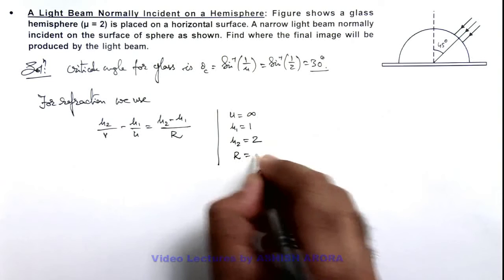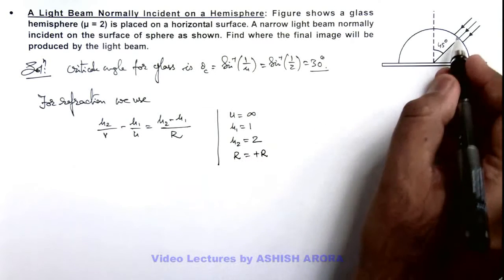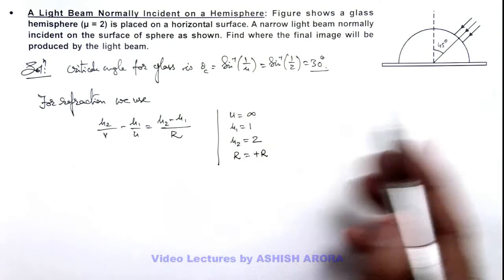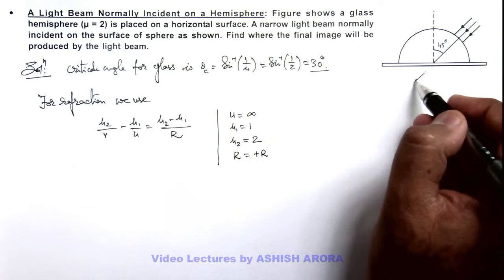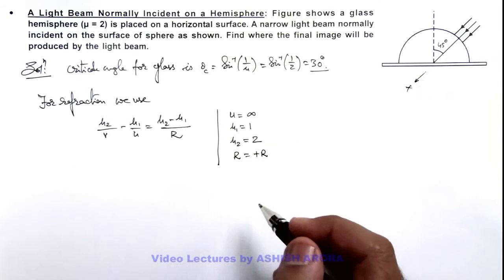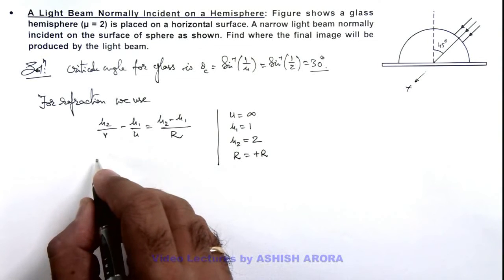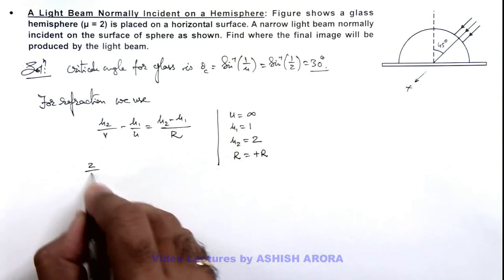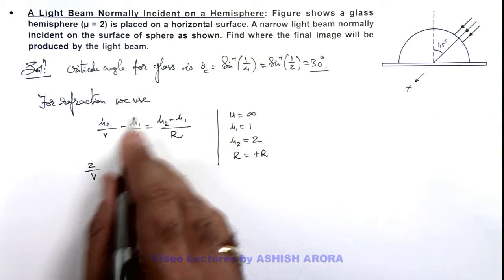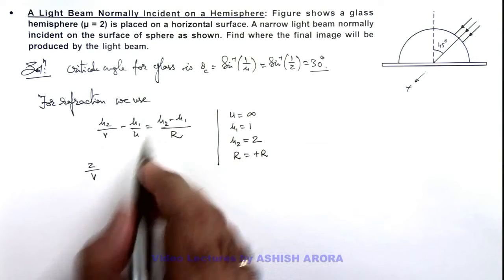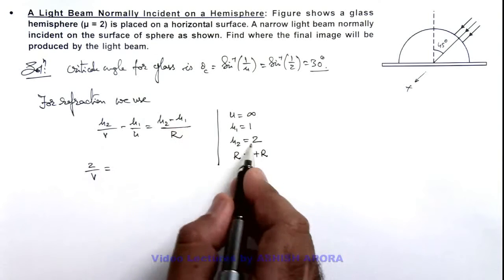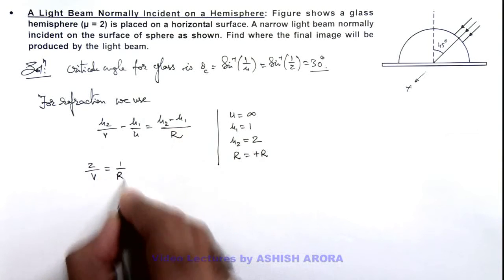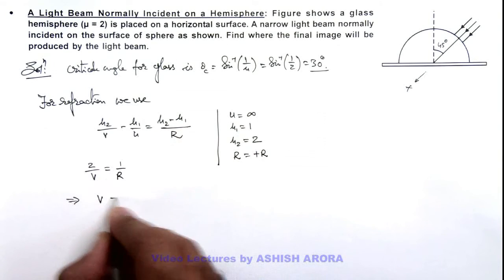Radius of curvature we take as plus R because it is on the left side, and we are taking this direction as positive for our sign convention. In this situation, we get μ₂ is 2 by v, and this term becomes zero because u is infinite. This equals (μ₂ minus μ₁) is 1 by R. This implies the value of v we are getting is plus 2R.